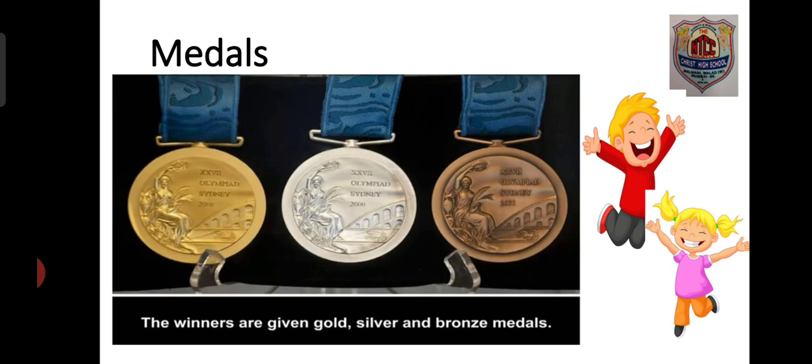When there are winners, medals are awarded. The three medals given are gold, silver, and bronze. The person who stands first deserves the gold medal, the second winner gets the silver medal, and the person who stands third receives the bronze medal. Here I have shown you pictures of those three medals that you can win when you have won any competition at the Olympic Games.